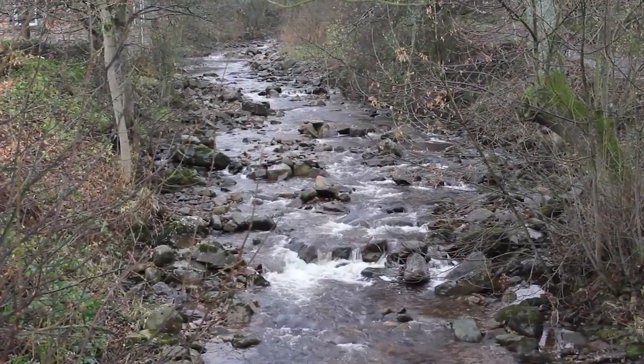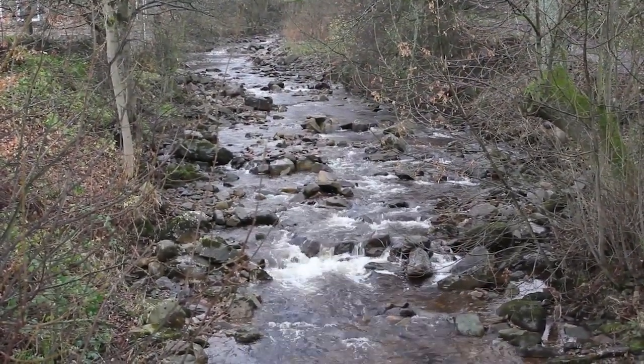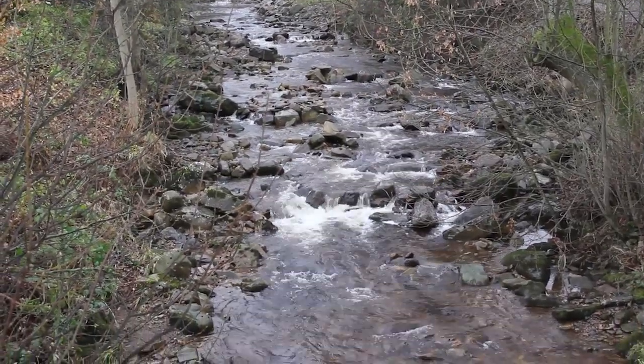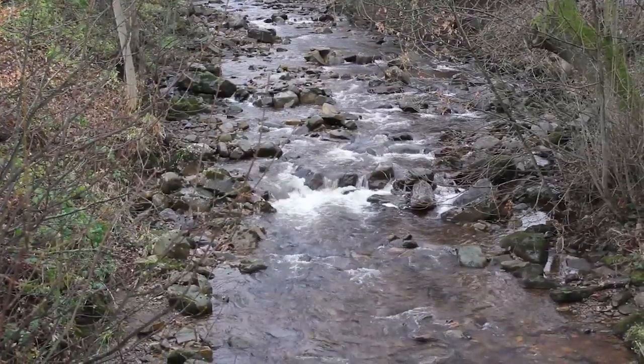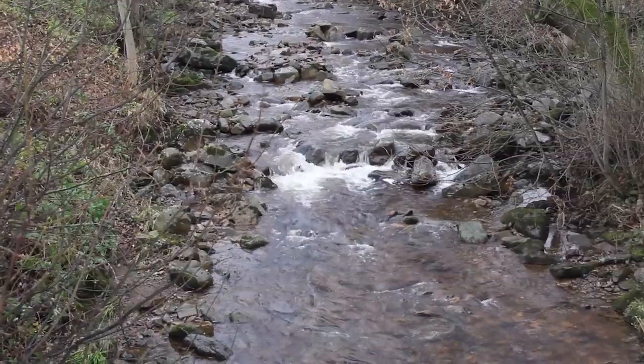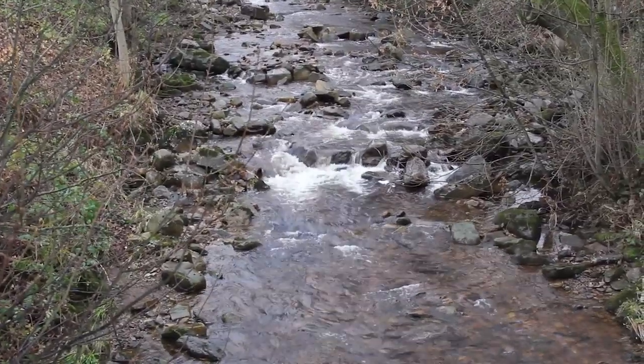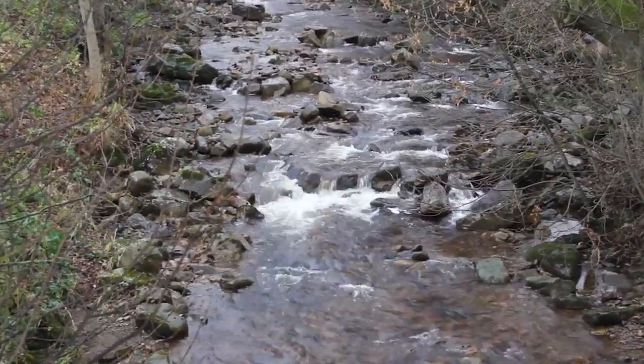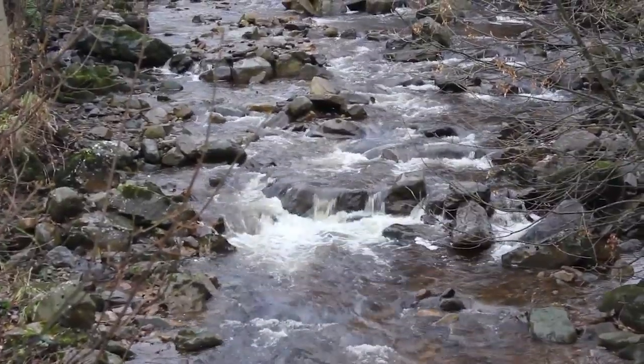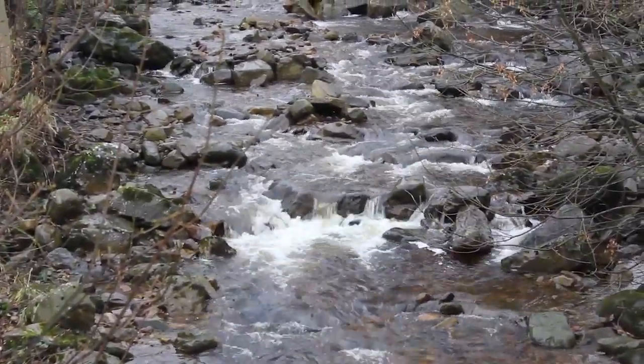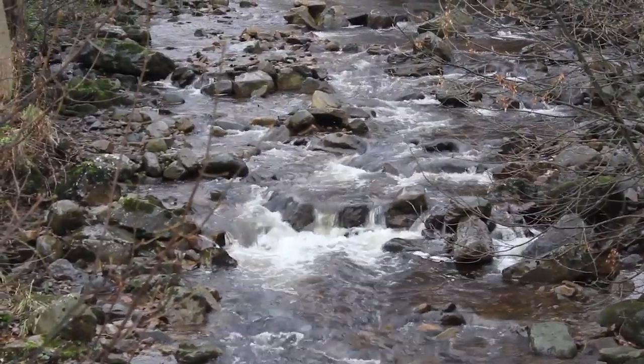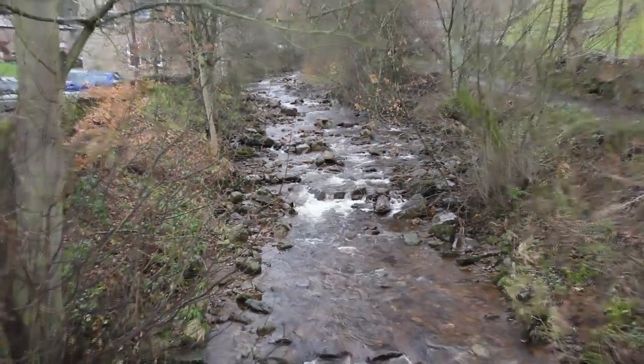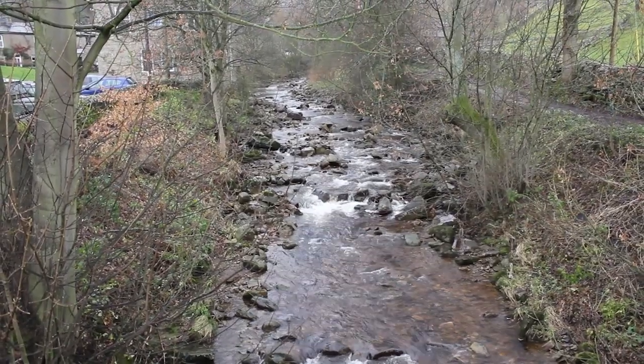Here we are looking at Gunnerside Gill in Swaledale, about a hundred kilometers from where we were before in York. This is an excellent example of turbulent flow. All the rocks and boulders in the stream bed are causing the water to flow around them. As it does so, it introduces eddies and swirls. We get at a single point, the velocity of the water is not constant. This is the defining characteristic for turbulent flow.